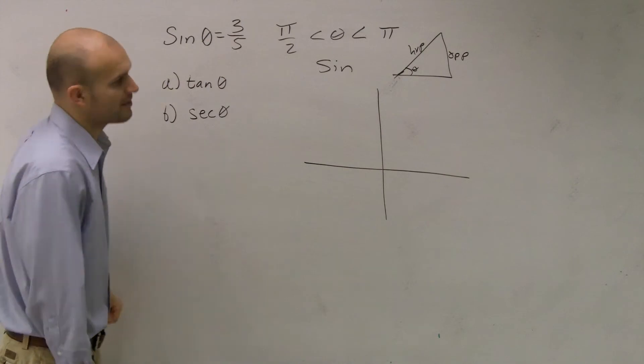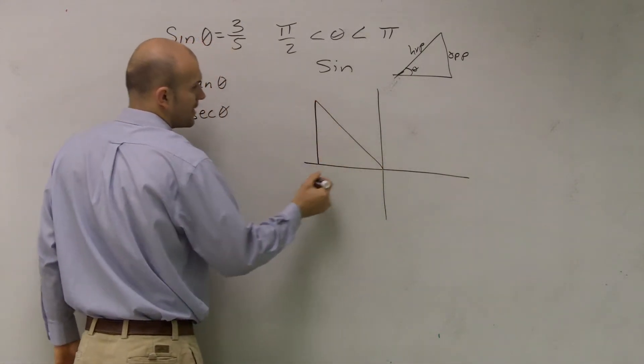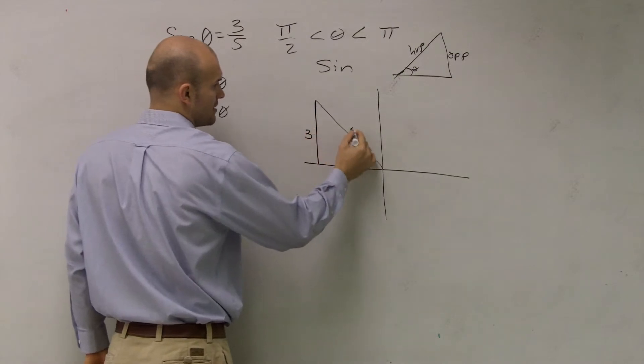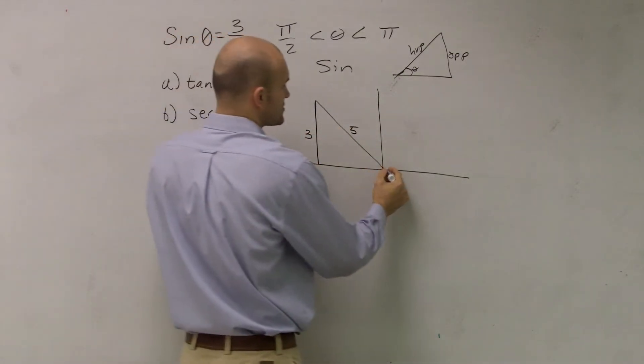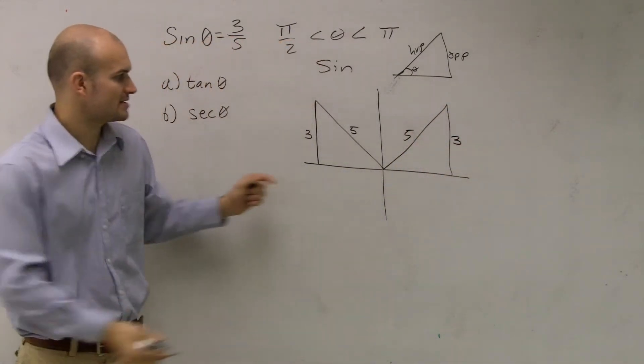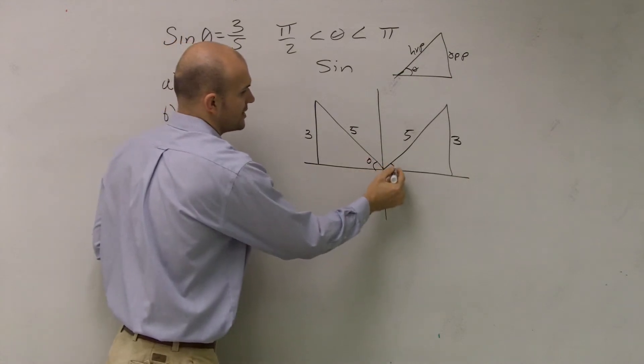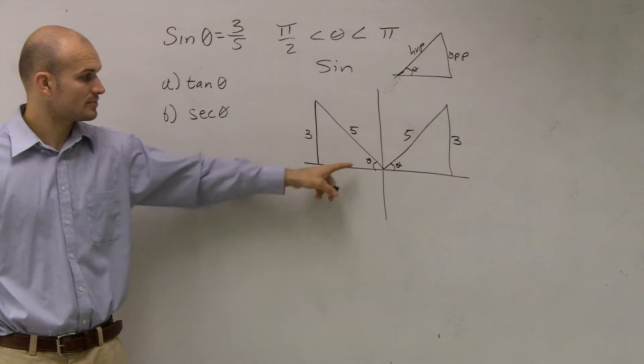So if I say sin is 3/5, there's really two triangles I can create. I could say that's 3 and that's 5, where my x is negative. Or I could also say I could have a point, sin 5, or sin would be like this, because let's say my two angles, theta, is right here and right here. Would my sine still be 3/5? Yes.